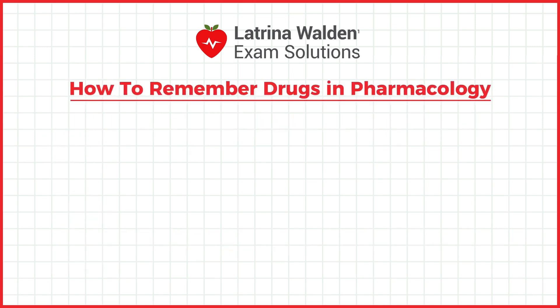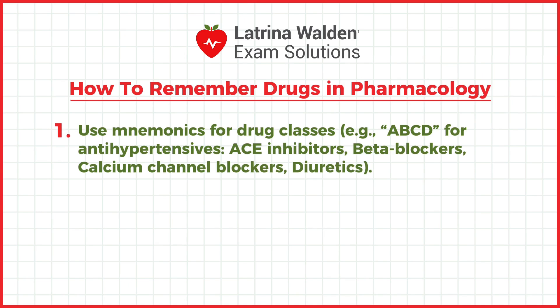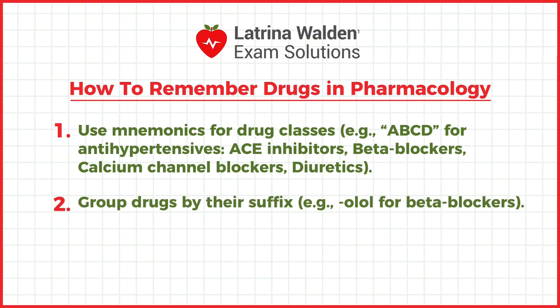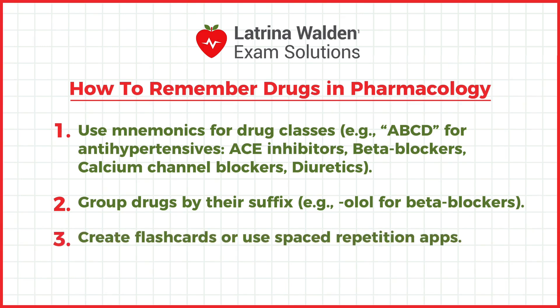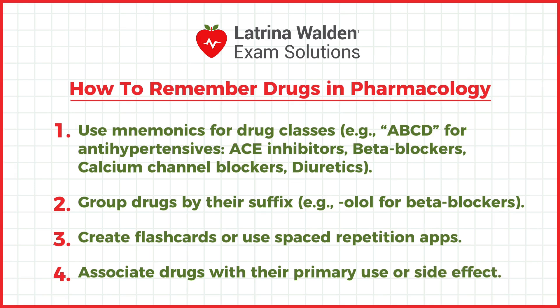How can you remember drugs in pharmacology? Use mnemonics for drug classes: A, B, C, D for antihypertensives — ACE inhibitors, beta blockers, calcium channel blockers, diuretics. Group drugs by their suffix, such as -olol for beta blockers. Create flashcards or use spaced repetition apps. Associate drugs with their primary use or side effect.